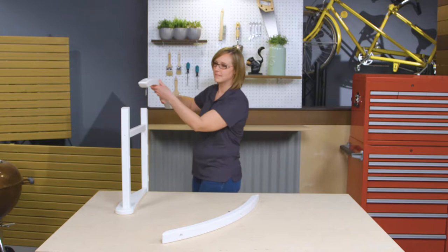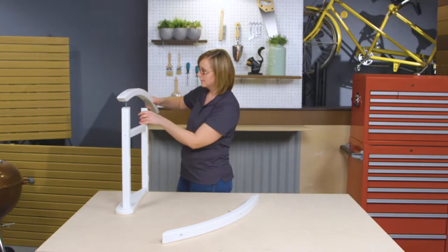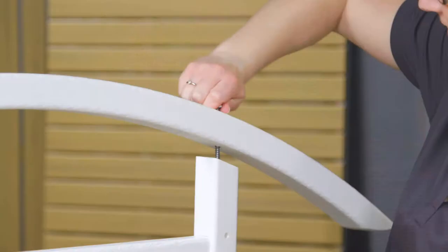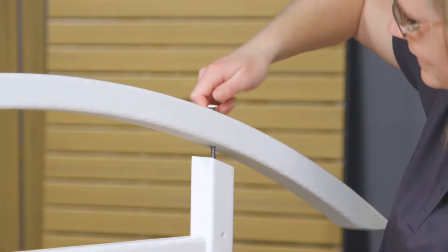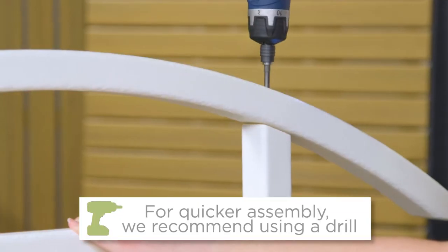Use the ends of the screws to loosely attach the rocker bottom to the right side frame. Tighten slightly by hand, then use a drill with the provided 4-millimeter hex key drill bit to tighten.